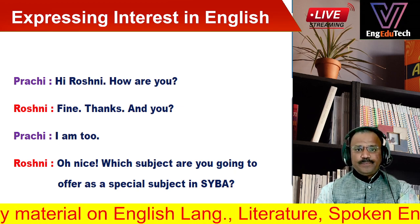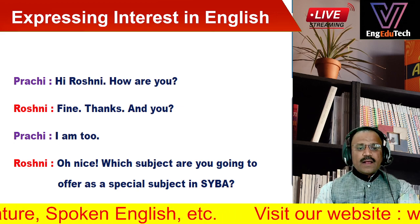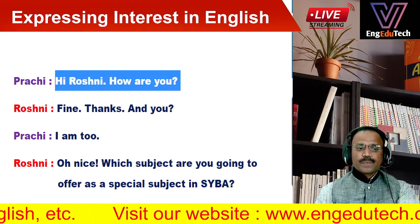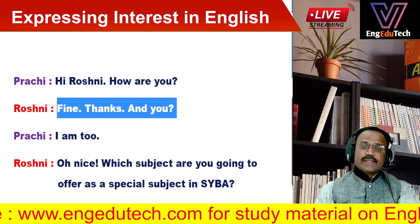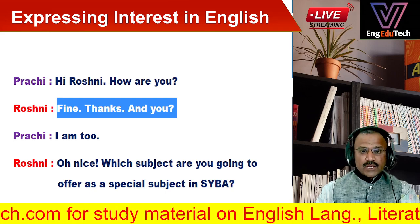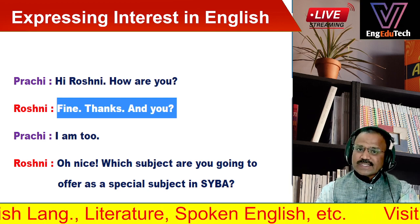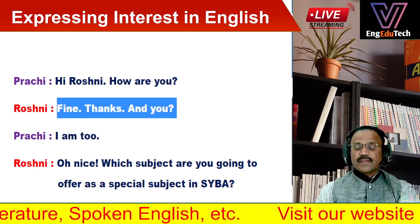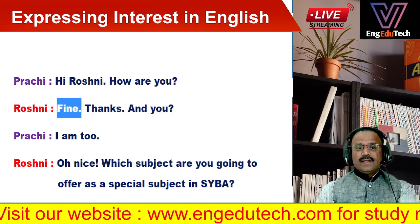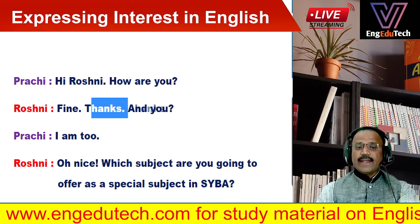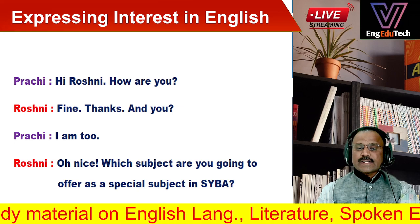There are two friends, Prachi and Roshni. They meet and discuss their interests. Prachi says, 'Hi Roshni, how are you?' Roshni says, 'Fine, thanks, and you?' This is an example of informal communication. Therefore the sentences used by Roshni are incomplete — she uses only important words. 'Fine' means 'I am fine,' 'thanks' means 'thank you,' and 'and you?' means 'how are you?'